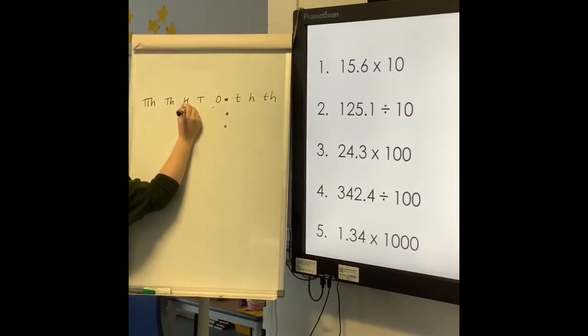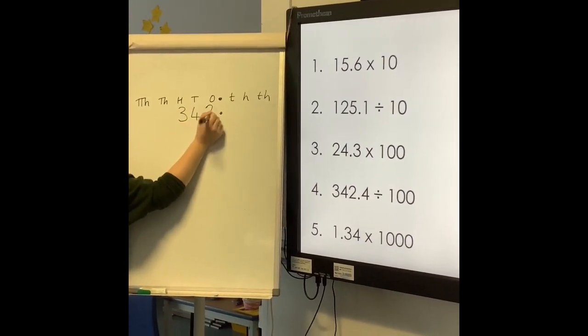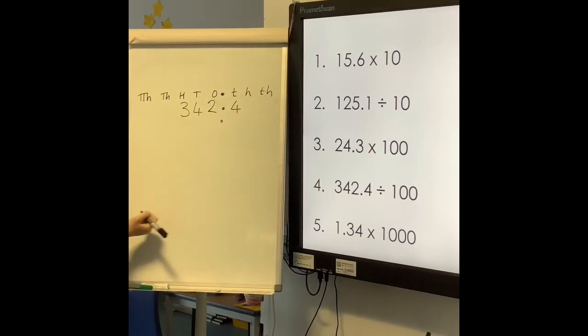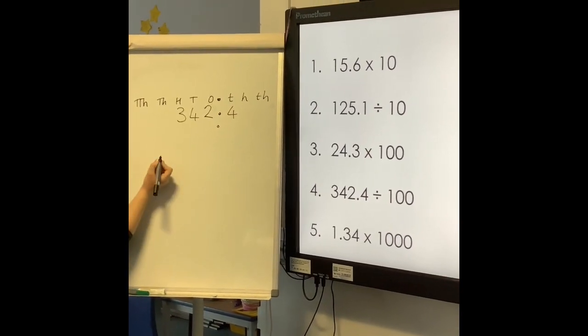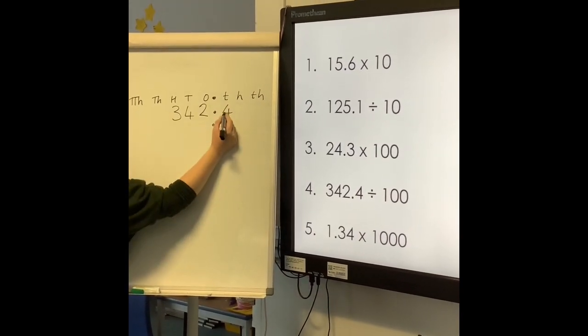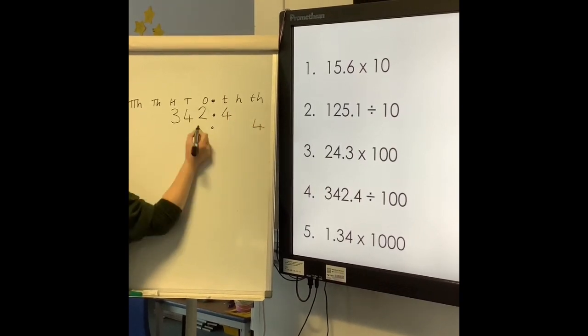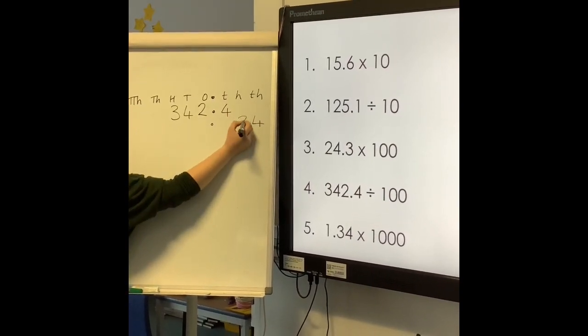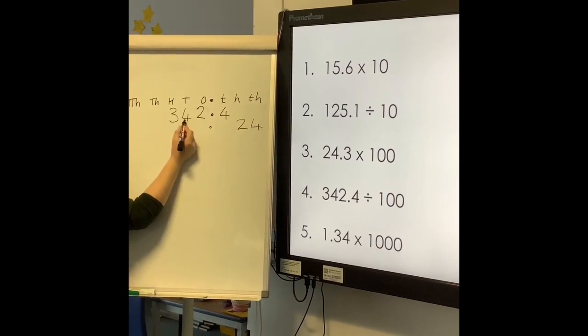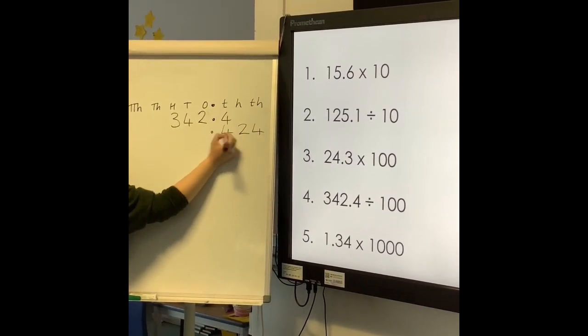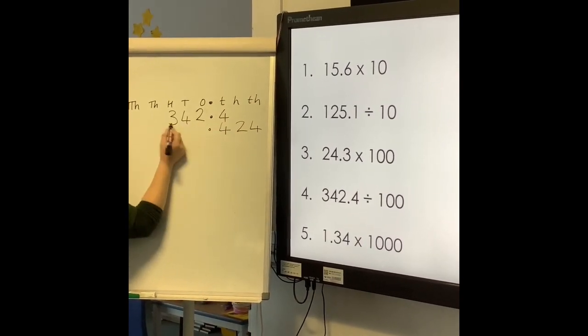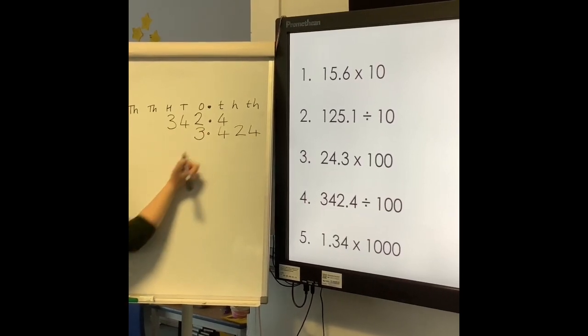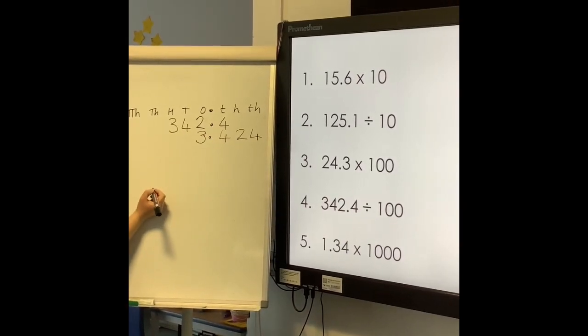Question 4: 342.4. Now you're dividing by 100. Each digit is going to go down two columns. 4 tenths is going to go into 4 thousandths. 2 ones is going to go down into 2 hundredths, 4 tens is going to go down into 4 tenths, 3 hundreds into 3 ones: 3.424.